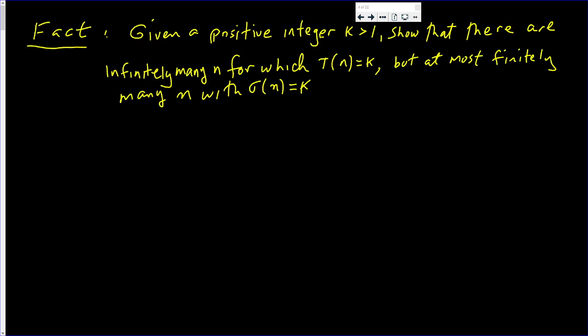In this video, I'm going to prove a couple of facts. Given a positive integer k bigger than 1, we're going to show that there are infinitely many n for which tau of n can equal k, but then most finitely many n where sigma of n is equal to k. And here is the proof.